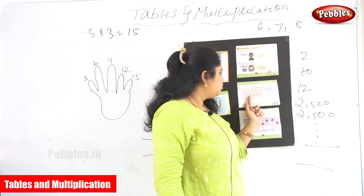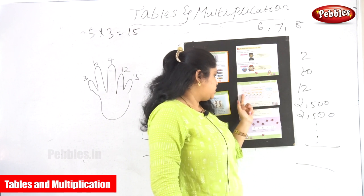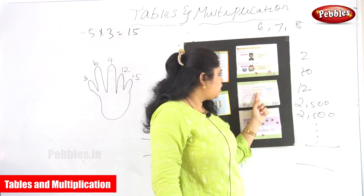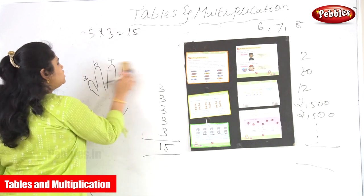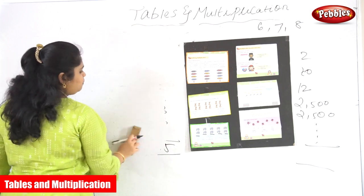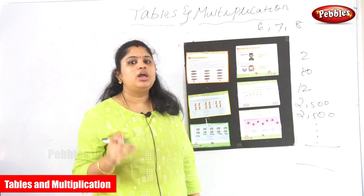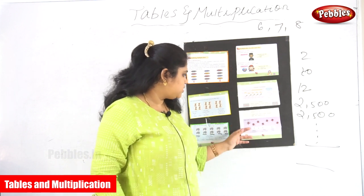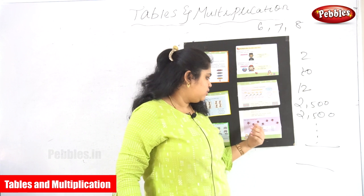So 3, 6, 9, 12, 15 — see the frog is jumping: 0 to 3, 3 to 6, 6 to 9, 9 to 12, 12 to 15. This is why we are grouping the numbers.